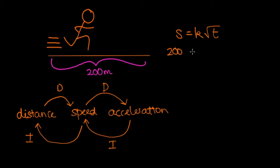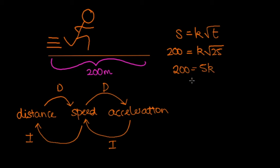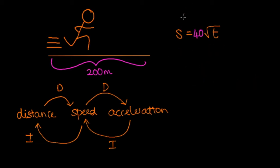So when his distance is 200 meters, 200 equals k times the square root of 25, because he passes the 200 meter point after 25 seconds. So 200 equals 5k, therefore k equals 200 over 5, which gives us 40. So we now have s equals 40 root t.